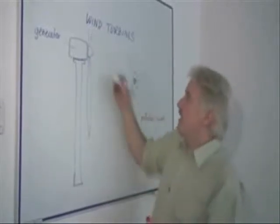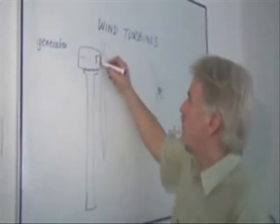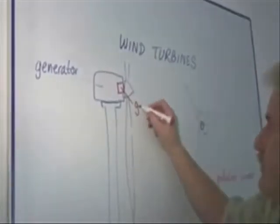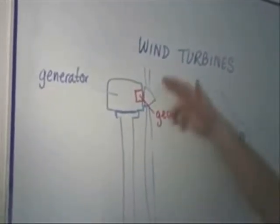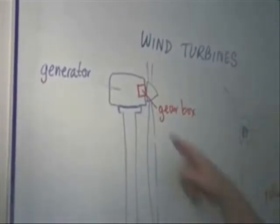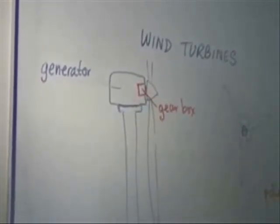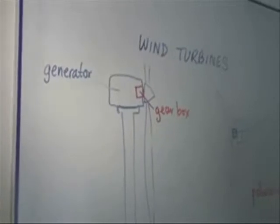Now, there is at this point what we call a gearbox, because the blade goes round quite slowly, and if it went round that slowly, the generator wouldn't generate much electricity.